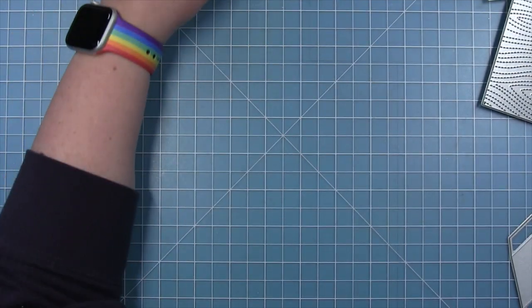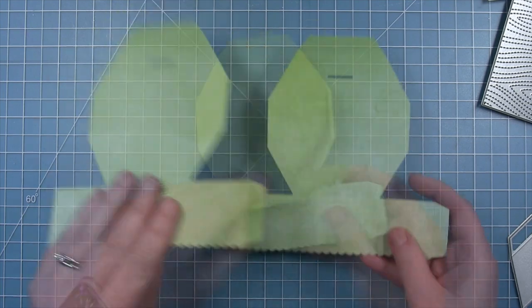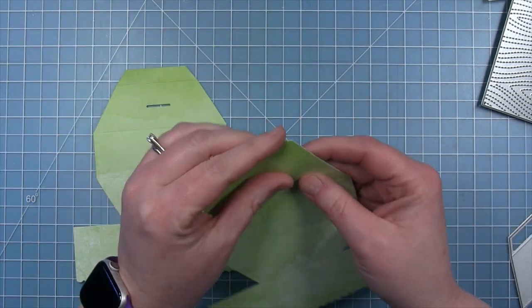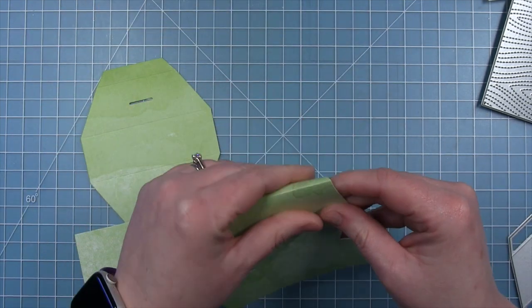And then I used my coordinating dies to cut out all my images, and I'll set those aside. Now for my platform pop-up, I've cut the base from the green watercolor wishes paper.